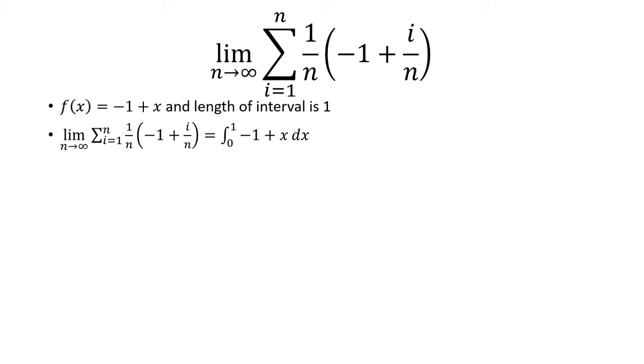If we let u equal -1 + x, we can rewrite this integral and we would change the limits. When x is 0 we would have -1 + 0, which is -1 for u. And when x is 1, u will be -1 + 1, which is 0.